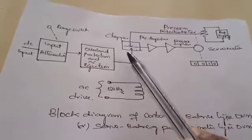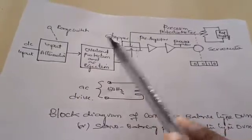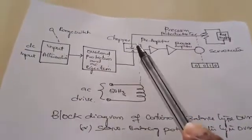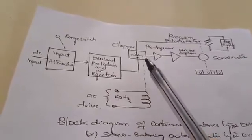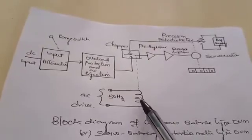So this chopper is acting as a comparator which compares both the voltages—the input voltage to be measured and the reference voltage. After comparison it gives some output. That output is driven by this AC drive at a line frequency.